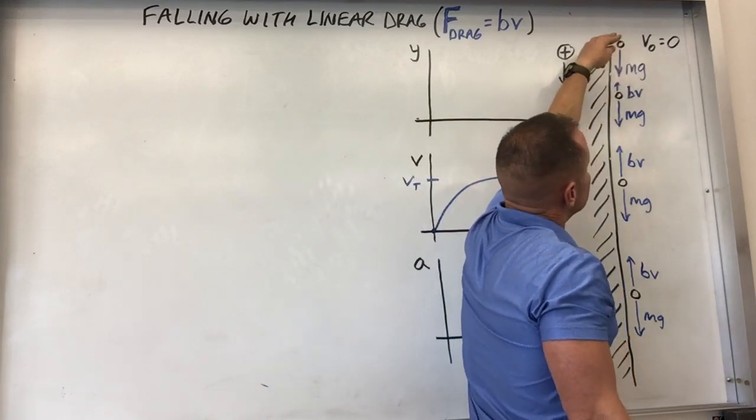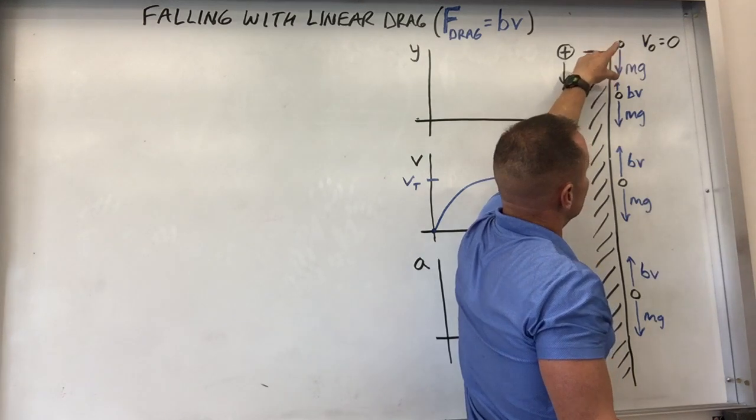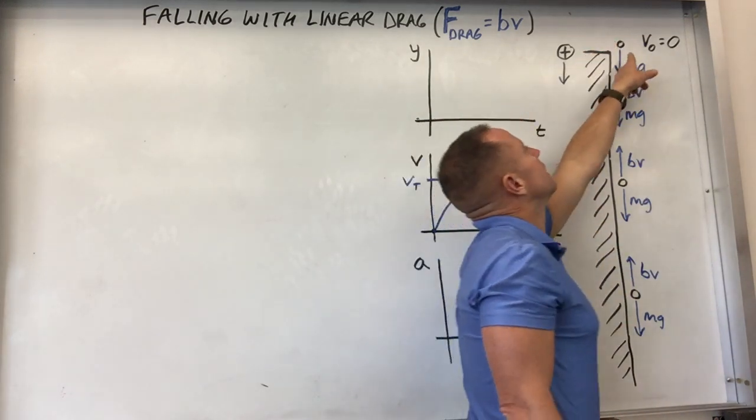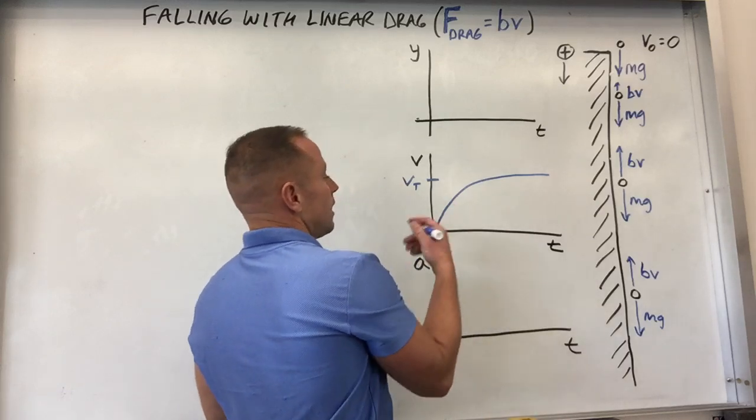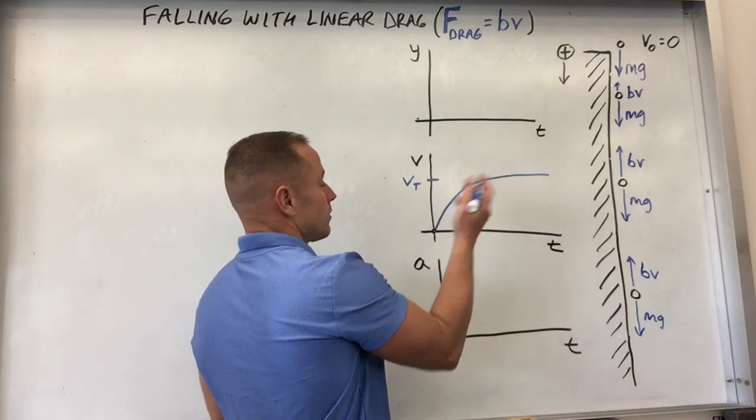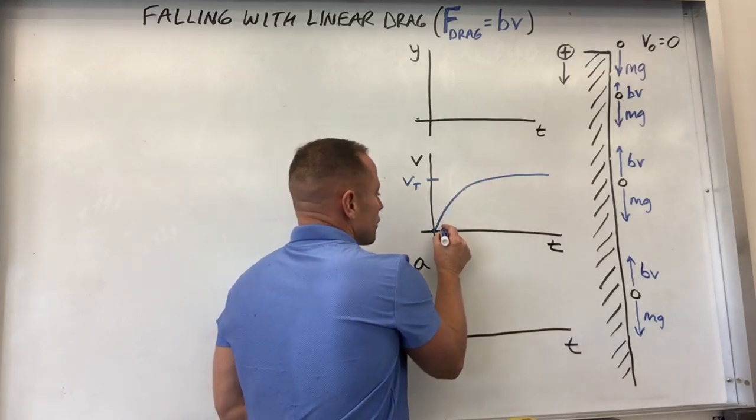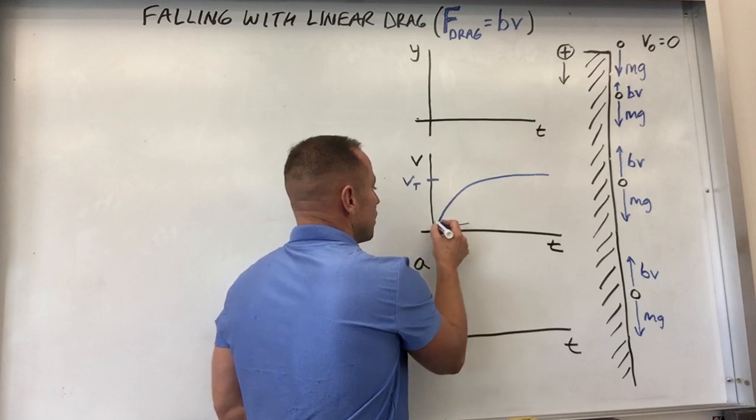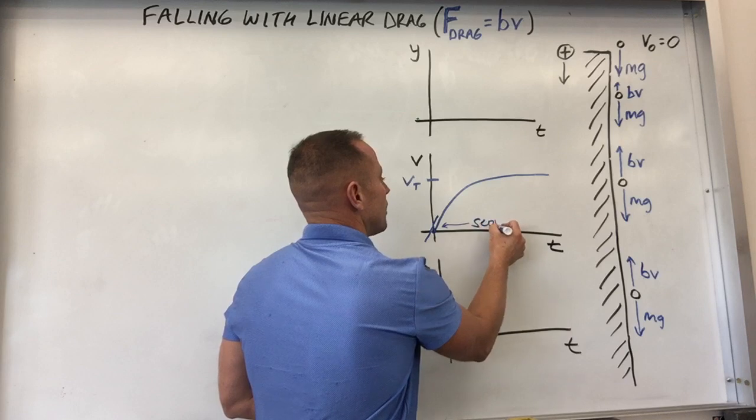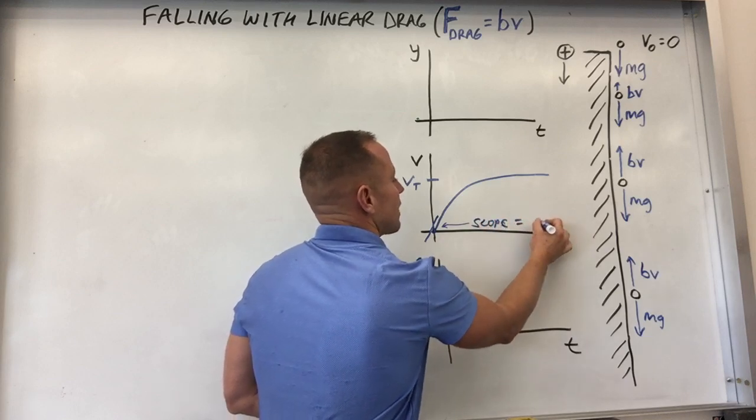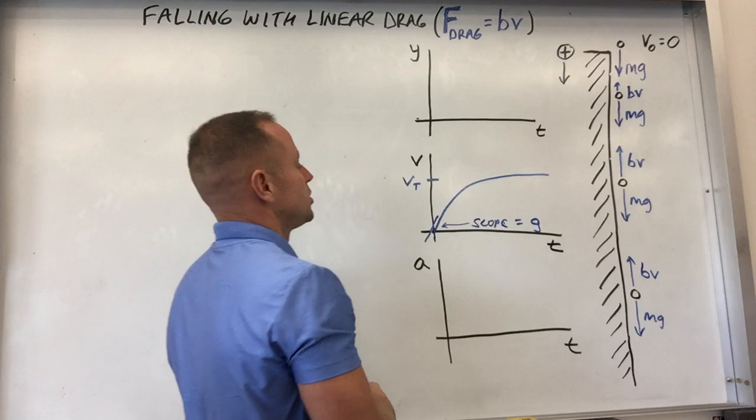And then eventually that speed is going to tap out or level out at what's called VT, V terminal. Before, right when you let it go, the friction force, air drag force, hasn't had a chance to grow. And so the only force on it is mg. That means its downward acceleration is actually going to be g or 9.8. So the slope here, this initial slope, it starts out with a slope of g.